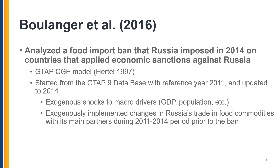Boulanger et al. 2016 analyzed impacts of a food import ban that Russia imposed in 2014 on countries that applied economic sanctions against Russia. The analysis used the GTAP CGE model and GTAP database version 9, representing the global economy in 2011. A database update from 2011 to 2014 was performed prior to running experiments simulating the ban, taking into account changes in macro drivers such as GDP, population, and factor endowments, as well as changes in Russia's trade with its main partners during 2011–2014.